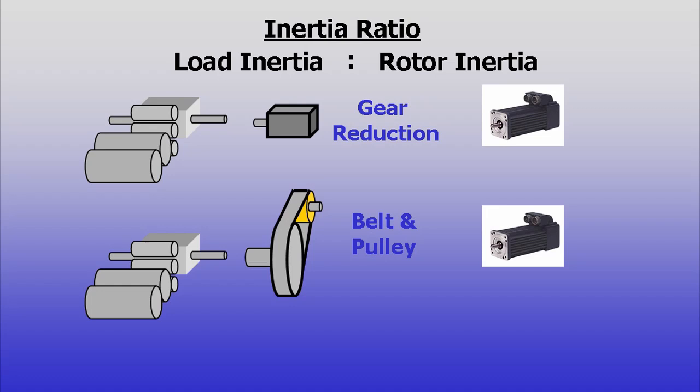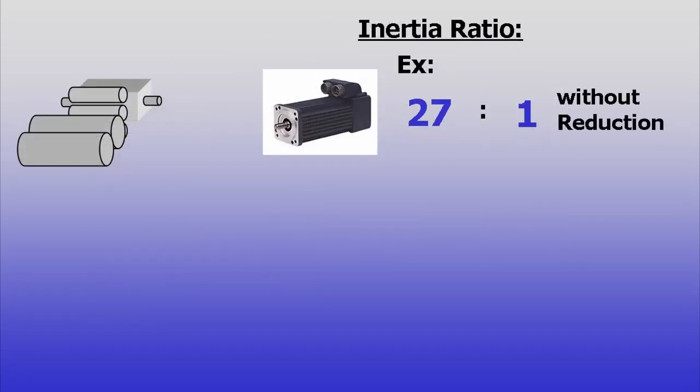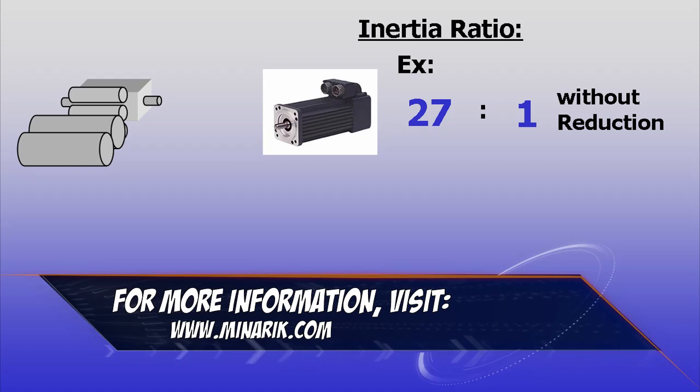Reflected inertia decreases as the square of the reduction ratio. For example, say an inertia ratio is 27 to 1, which is outside normal limits.